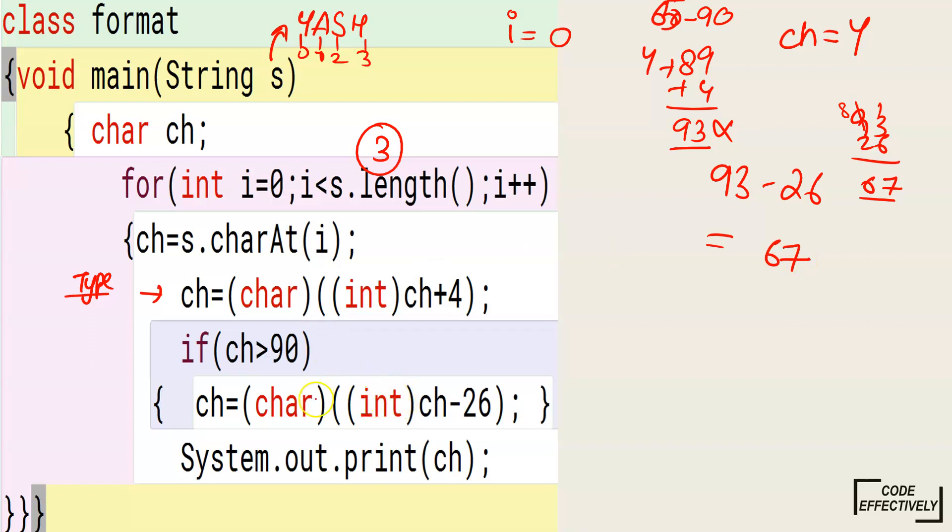It will take this 67 and then convert it into character type. 67 character type, we know that it is starting from 65, 66, 67: A, B, and 67 will be C. So it will print C. You will get your output here: C.